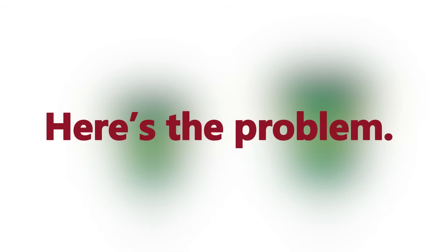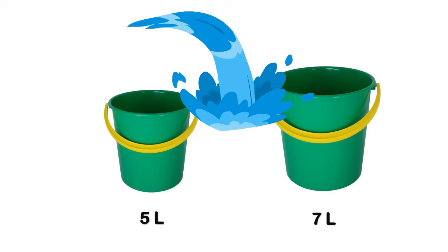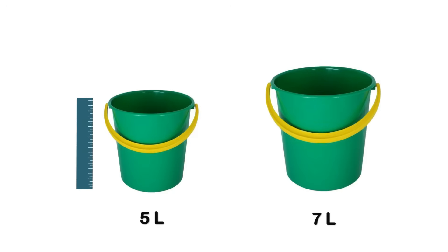Here's the problem. We want to measure exactly 6 liters of water using only a 5-liter bucket, a 7-liter bucket, and an unlimited water source. The important point is that none of the buckets are graduated. That means we can't fill them halfway, and we can't jump straight to the answer from the start.